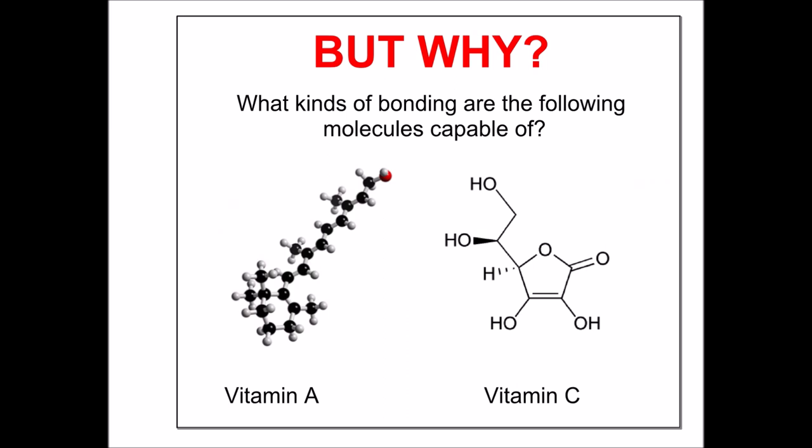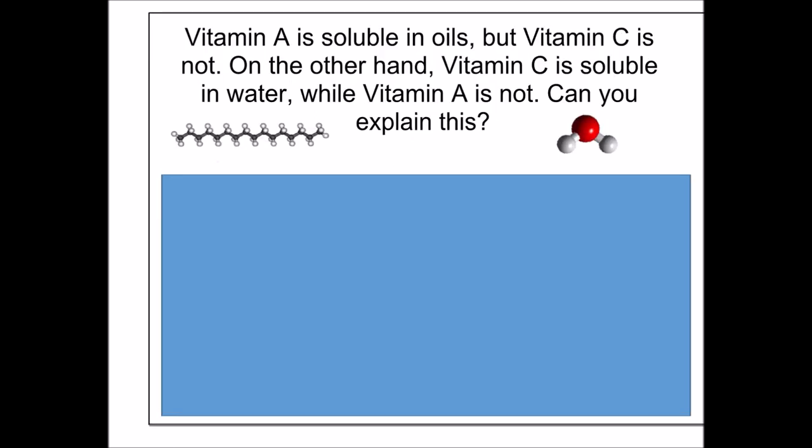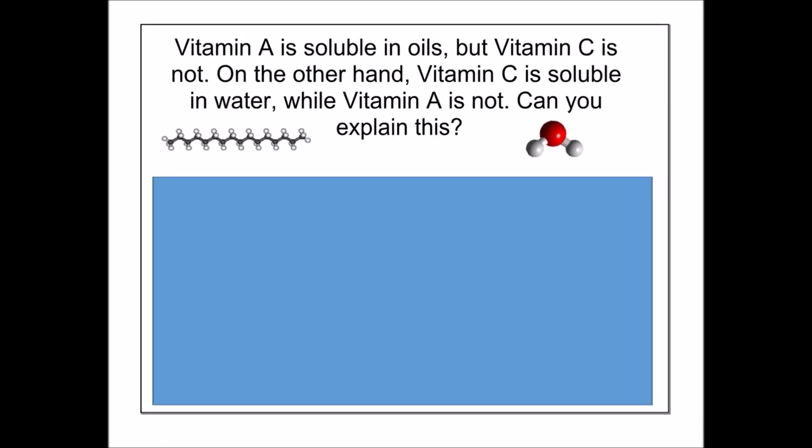So now the question is why. And then we ask you first, what kinds of bonding are the following molecules capable of? We have a diagram of vitamin A and a diagram of vitamin C. Pause the video and think about intermolecular forces for a moment. I'll give you the added information that vitamin A is soluble in oils, but vitamin C is not. On the other hand, vitamin C is soluble in water, while vitamin A is not. I'd ask you to think about explaining that.